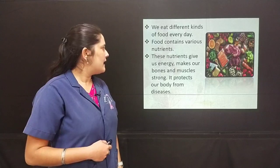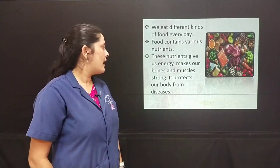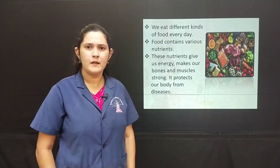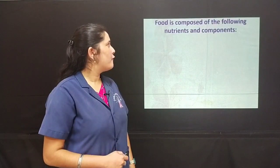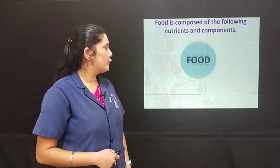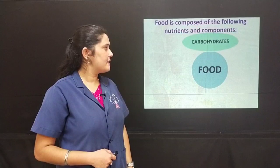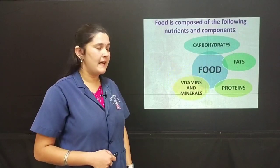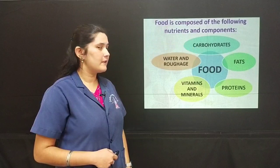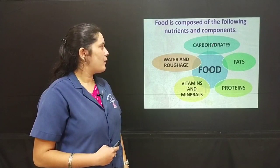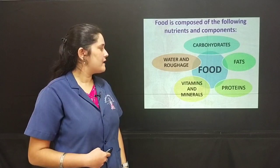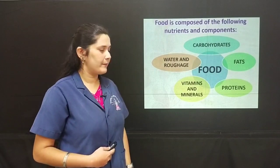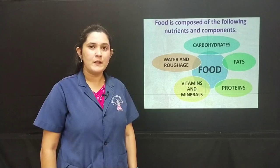How do these nutrients help us? Nutrients give us energy, make our bones and muscles strong, and protect our body from diseases. Food is composed of the following nutrients and components: carbohydrates, fats, proteins, vitamins and minerals, water and roughage. Carbohydrates, fats, proteins, vitamins and minerals are the nutrients. Water and roughage are the components of food.